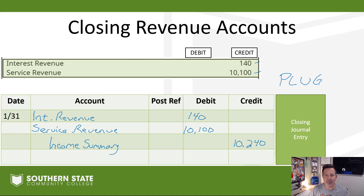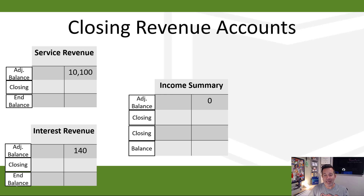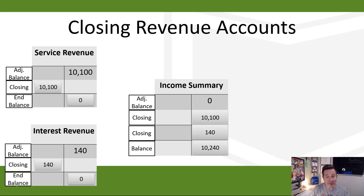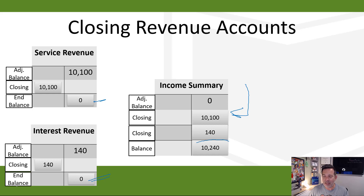Looking at it from a T-account standpoint: we had $10,100 in service revenue and $140 in interest revenue, and we dumped them both into income summary. Now the ending balance in service revenue is zero and interest revenue is zero. We've dumped them into income summary, which now shows a $10,240 balance — representing all the revenue transactions that happened during that period.